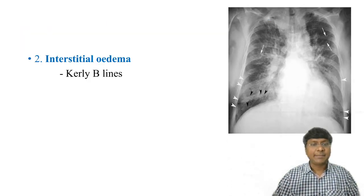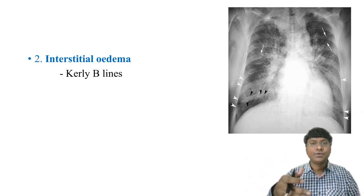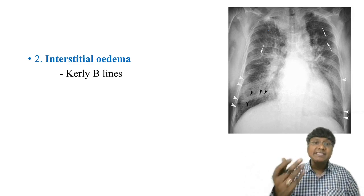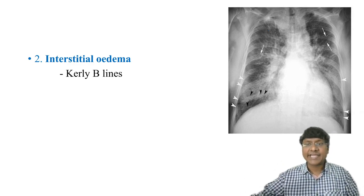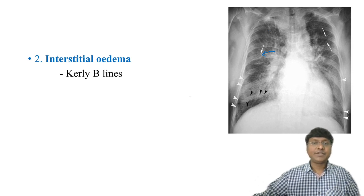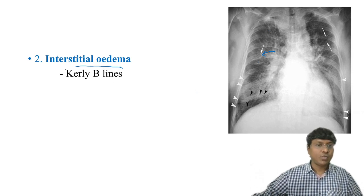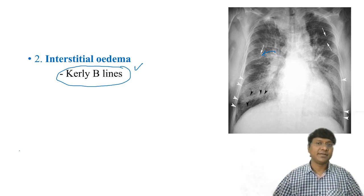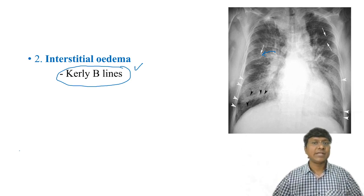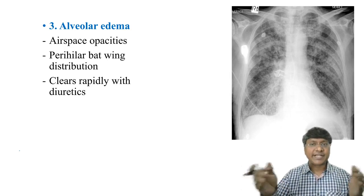As pressure further increases, the rise in pulmonary capillary wedge pressure causes fluid from the pulmonary capillaries to enter the interstitium. This interstitial edema gives the chest X-ray finding called Kerley B lines.